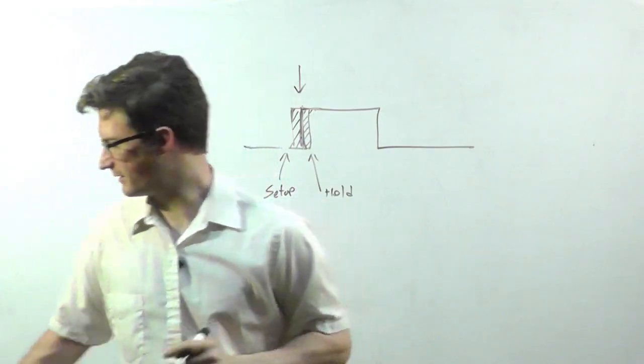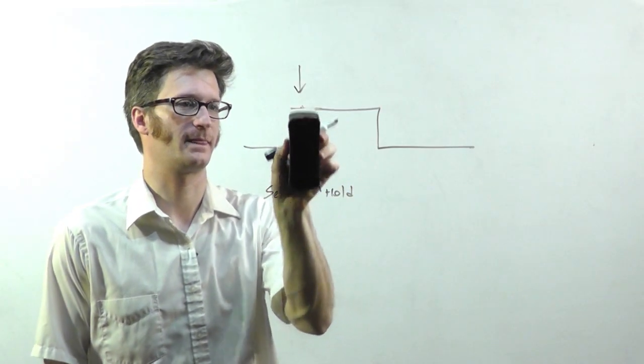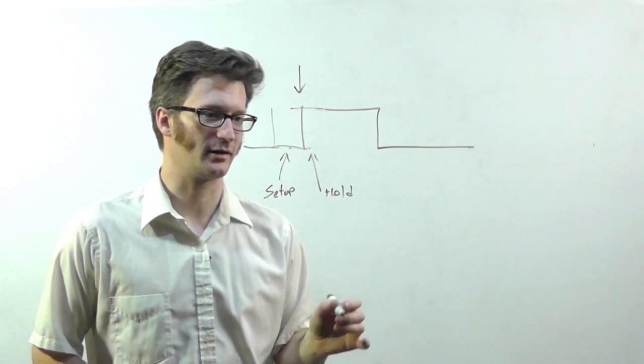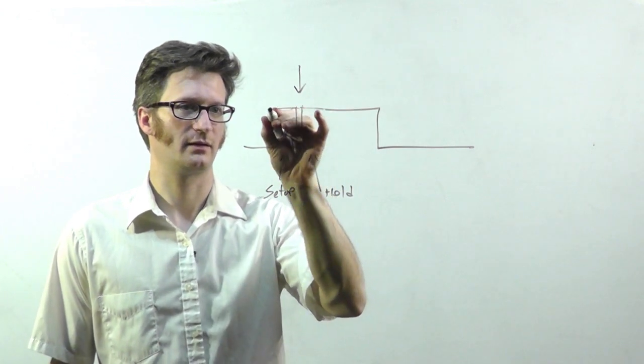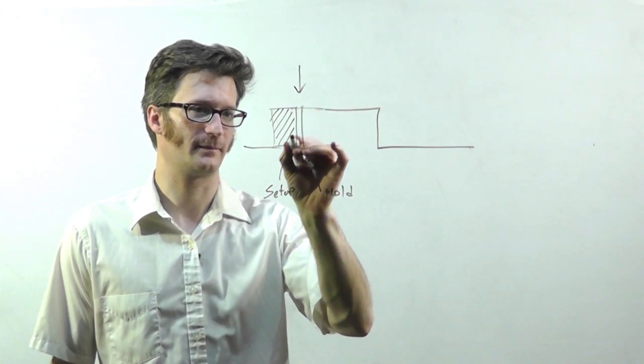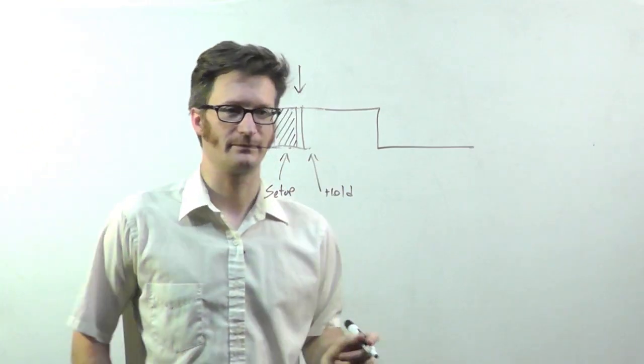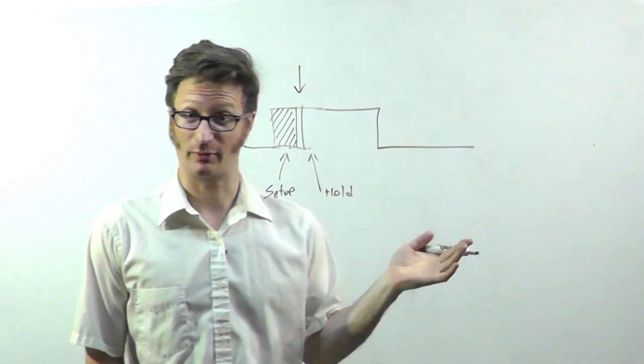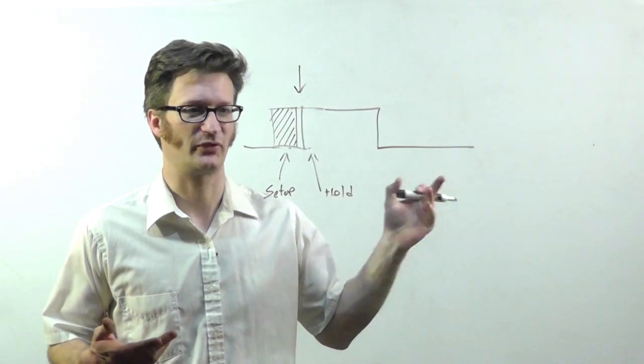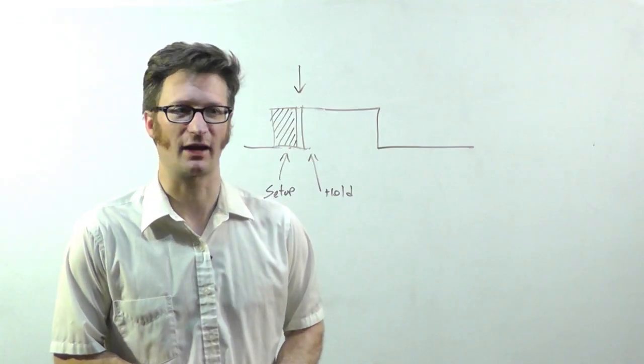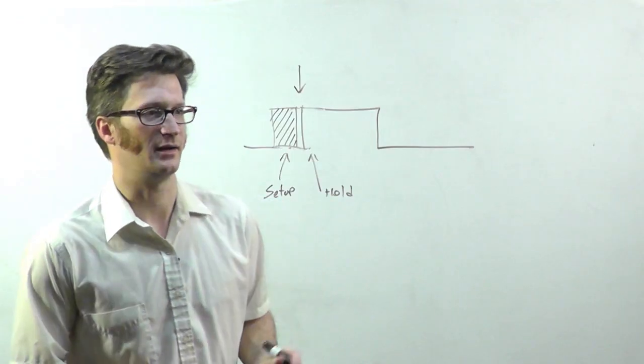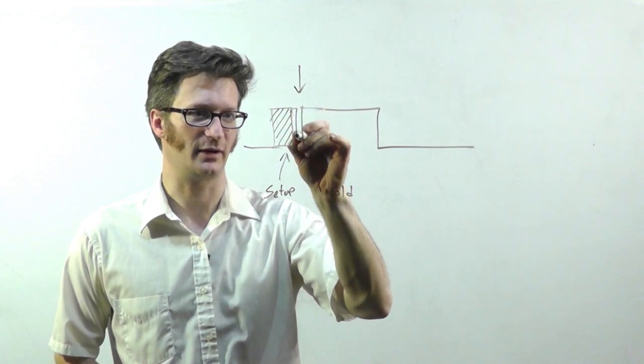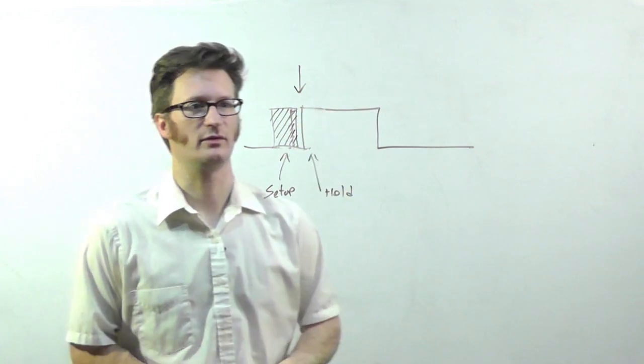One other interesting thing about the hold time is that it can be negative. So if my setup time starts here, if I have a negative hold time, then that defines this area right here as the time that my data has to be valid. And that seems a little strange because everything's supposed to happen on the clock, but that's the way it actually works. If you look at data sheets, you'll see that it might be negative two or negative six nanoseconds. If you have a low voltage, it might be out here, and if it's a little bit higher voltage, it creeps up a little bit closer to the clock edge.